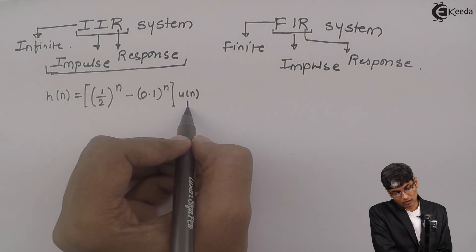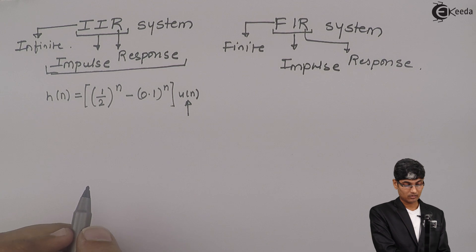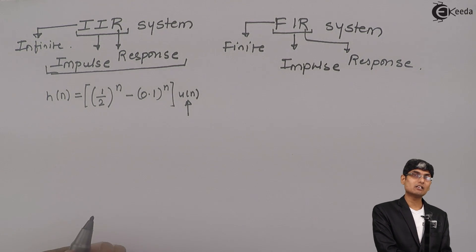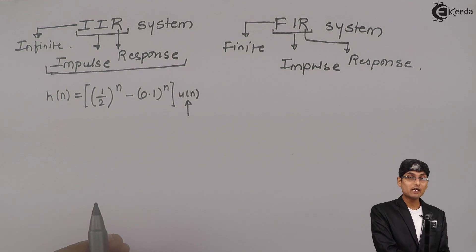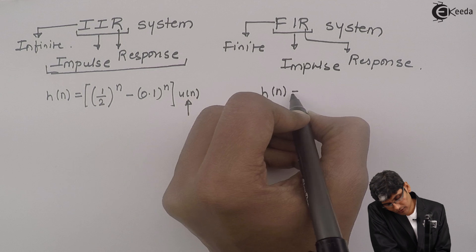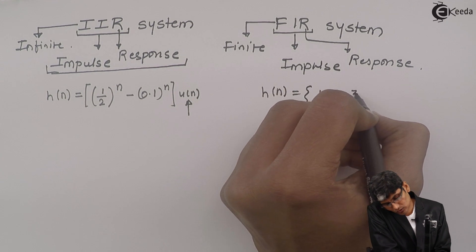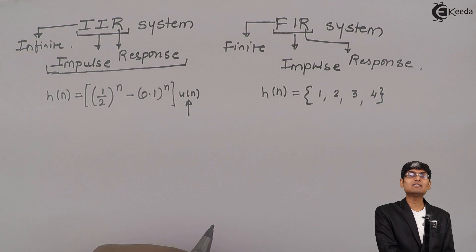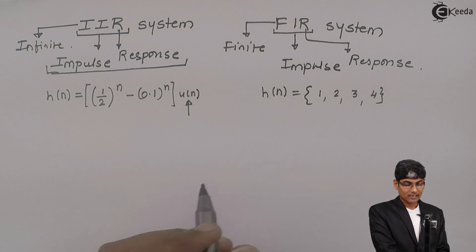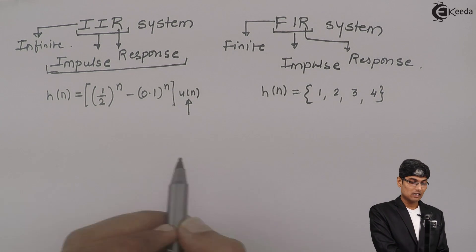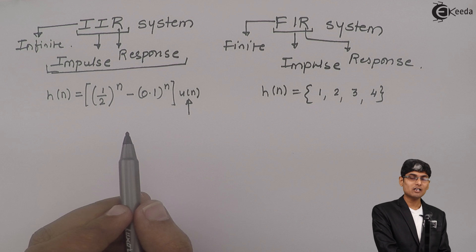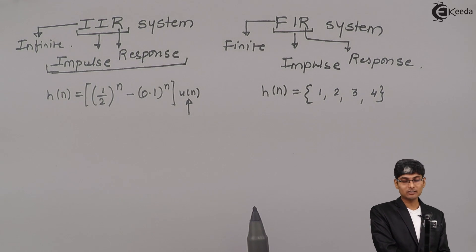Here we know that U(n) is an infinite length sequence, so this impulse response will carry on till infinity — this is an infinite length sequence. For a finite length sequence, for example, H(n) = {1, 2, 3, 4}. This is a finite length sequence where we have 4 samples in the impulse response. Such impulse responses are called finite length, while the previous ones are called infinite length.